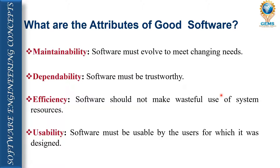Now, what are the attributes of a good software? The first attribute is maintainability — software should be easily maintained, meaning it should be able to adopt changes as per our needs. For example, if we need to make changes to a software and only an expert can handle it, that software does not come under the maintainability attribute.